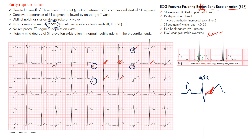To differentiate early repolarization from pericarditis and STEMI, go to www.ekg.md and search pericarditis. Key features favoring early repolarization: ST elevation limited to the precordial leads, and absence of PR depression — PR depression being something we'd see with pericarditis.